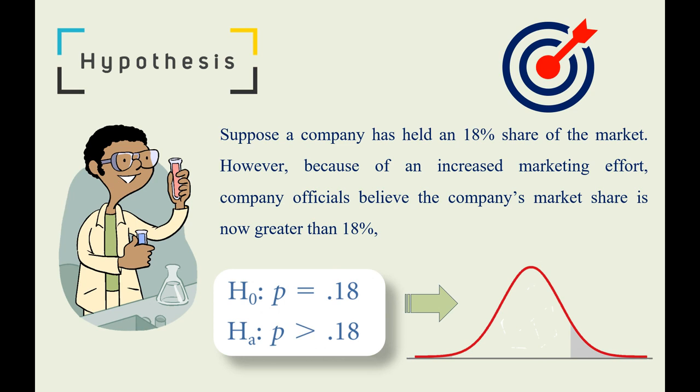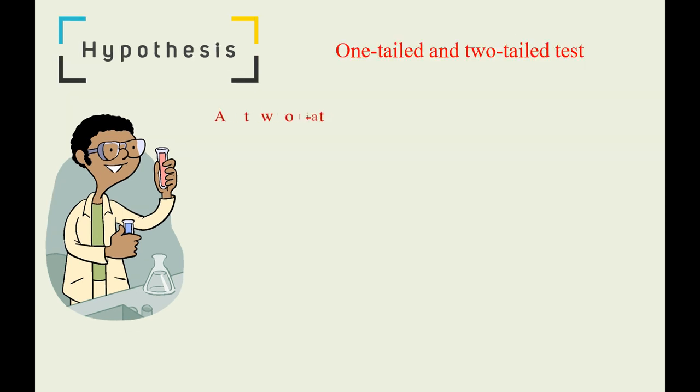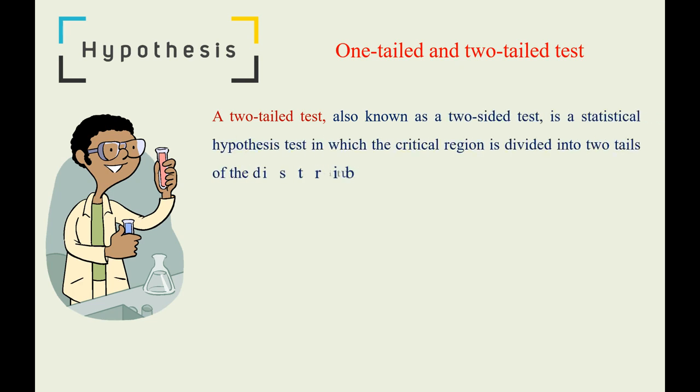Let's discuss the two-tailed test. A two-tailed test, also known as a two-sided test, is a statistical hypothesis test in which the critical region is divided into two tails of the distribution curve.